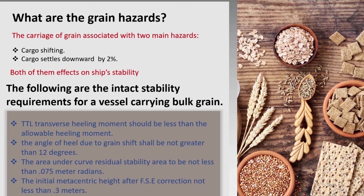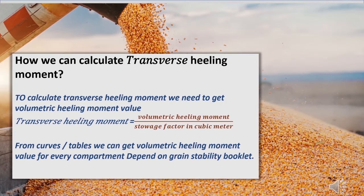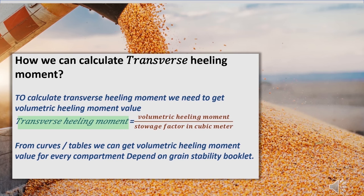Let's see how we can calculate total transfer heeling moment and compare it with allowable heeling moment. To calculate transfer heeling moment, we need to get the volumetric heeling moment value. After getting this value and dividing it by the stowage factor in cubic metres, we will get the transfer heeling moment.